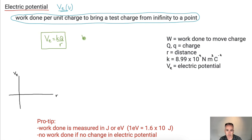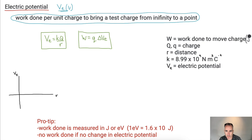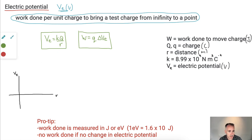We also have an equation for work: the work done equals Q times delta VE. Let's look at the units — work is in joules, charge is in coulombs, distance is in meters, and electric potential is in volts. This is also a 1/R equation. The work done can be measured in joules or electron volts, and remember that one electron volt is 1.6 times 10 to the minus 19 joules.